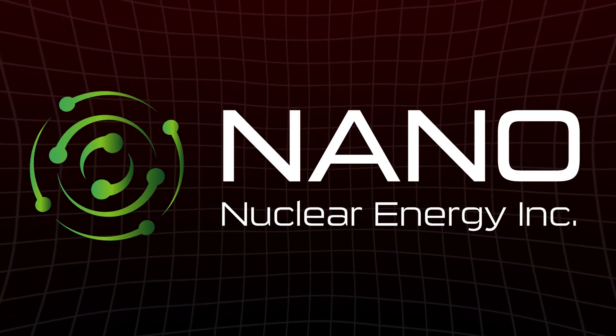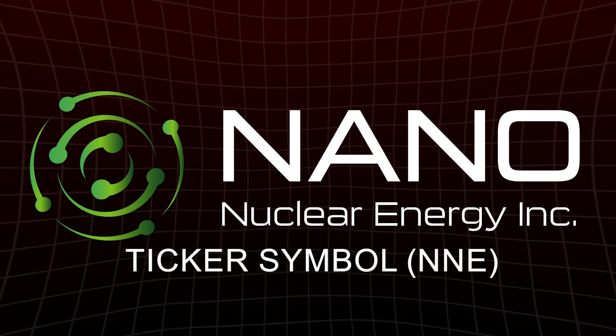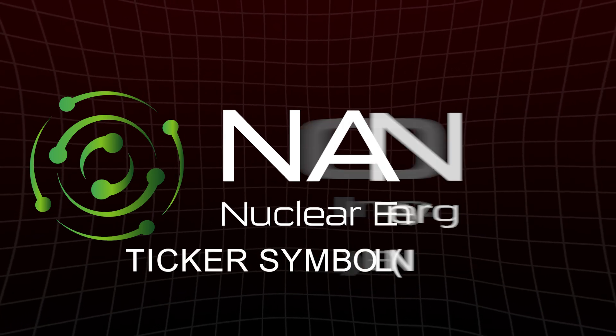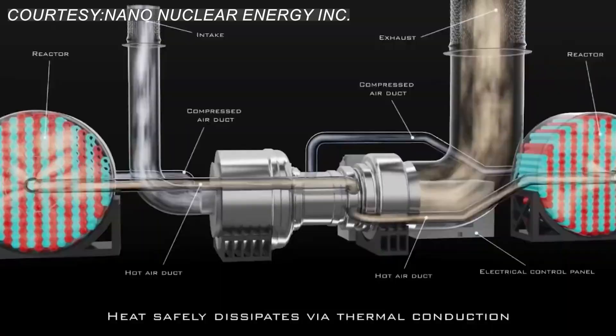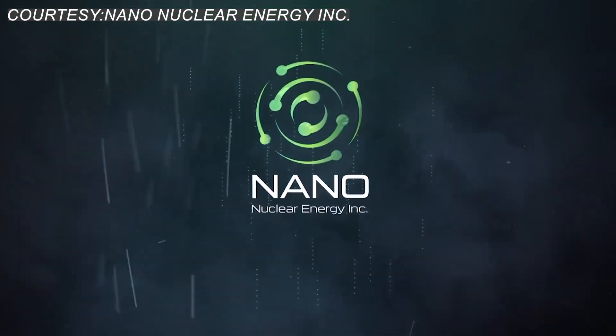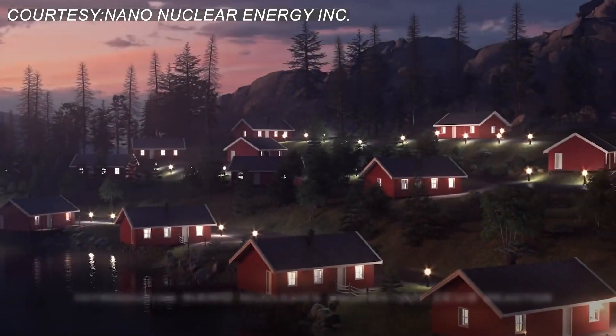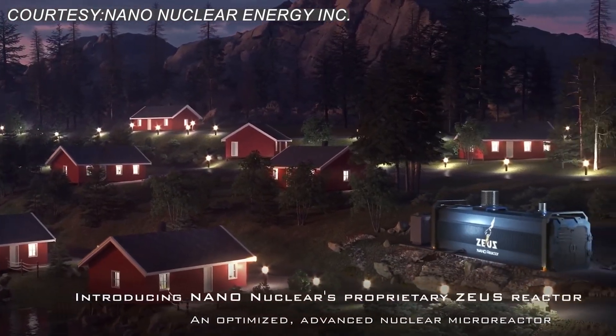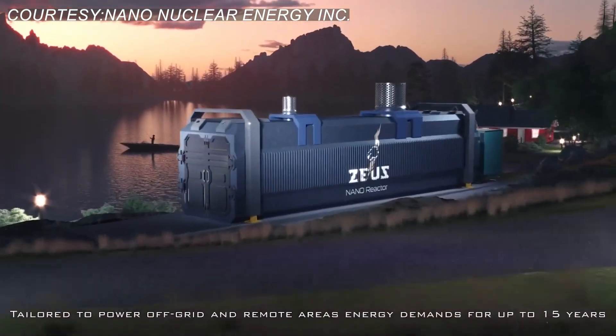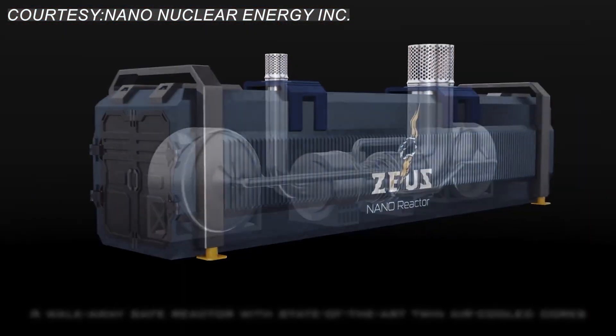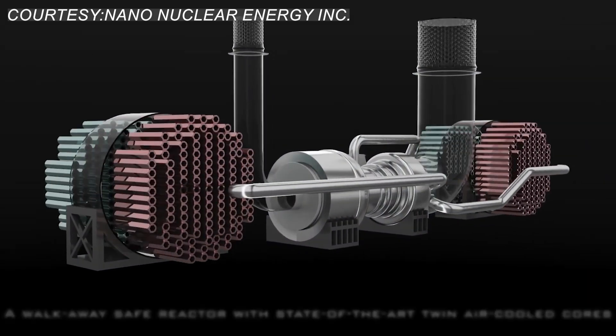Let's move to our second stock, Nano Nuclear Energy, ticker symbol NNE, a bold name at the bleeding edge of the nuclear energy renaissance. While it's still a pre-revenue company, Nano is one of the most exciting early-stage players developing small modular reactors, SMRs, and micro-reactors — technologies that could redefine how and where energy is produced in the AI era.